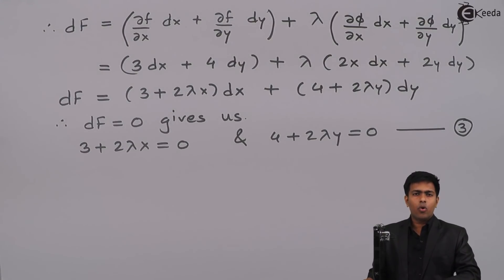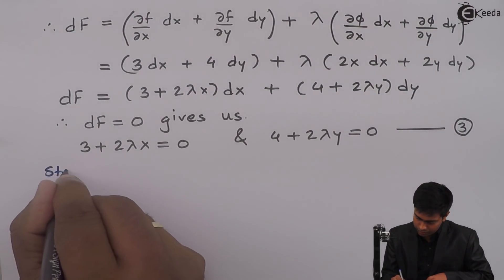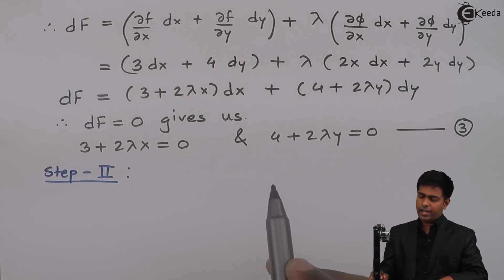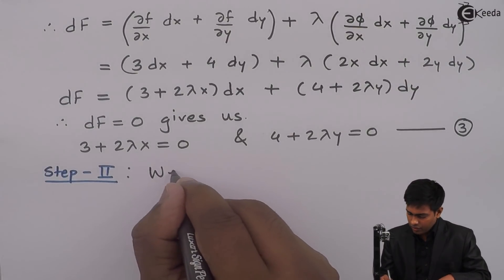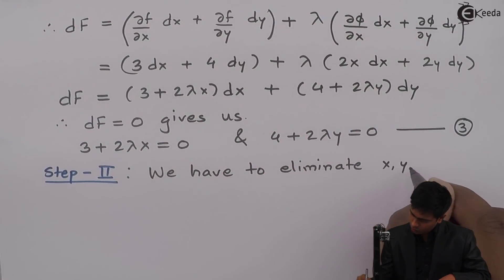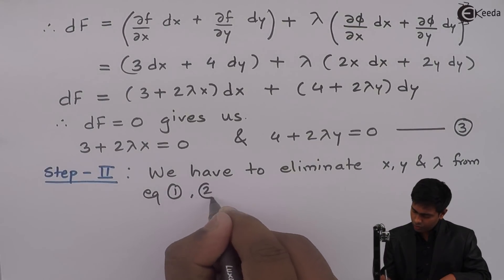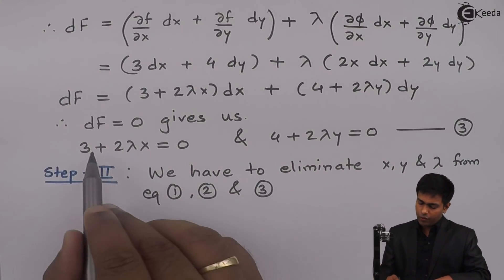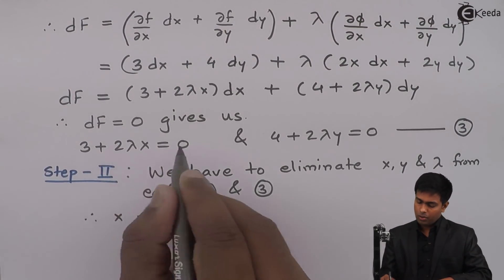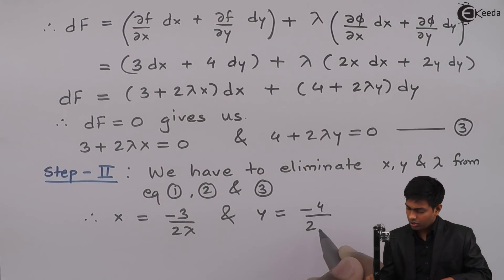Now we will solve equations 1, 2, and 3 to find out the stationary values. This is step number two: we eliminate x, y, and λ from equations 1, 2, and 3.